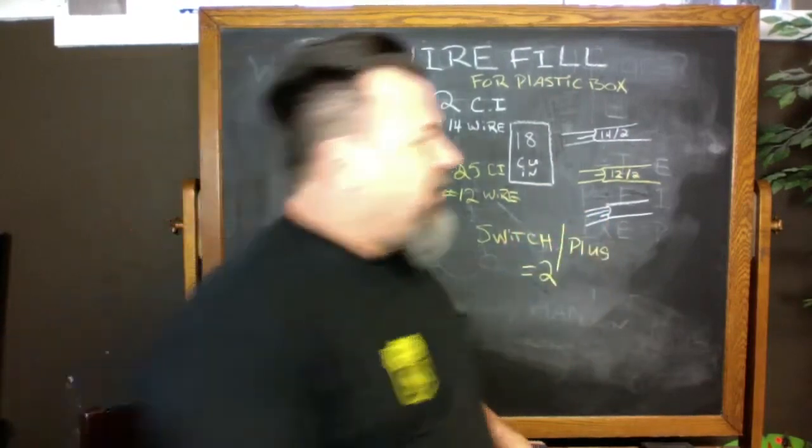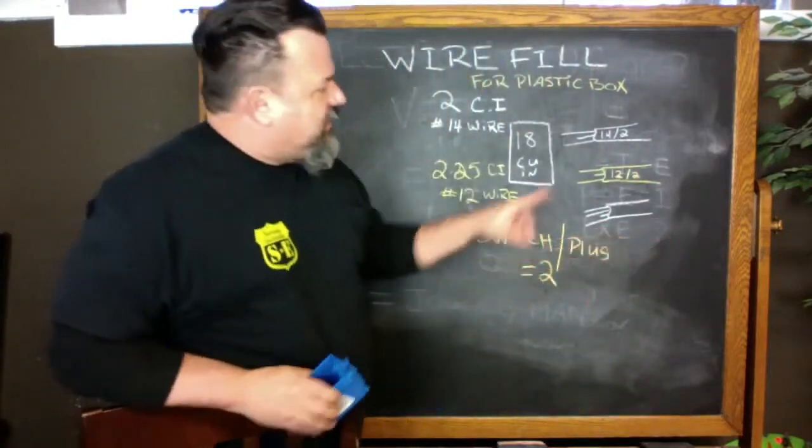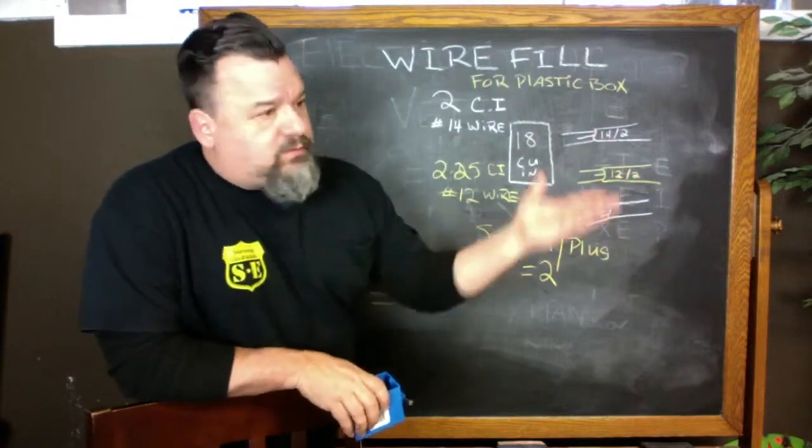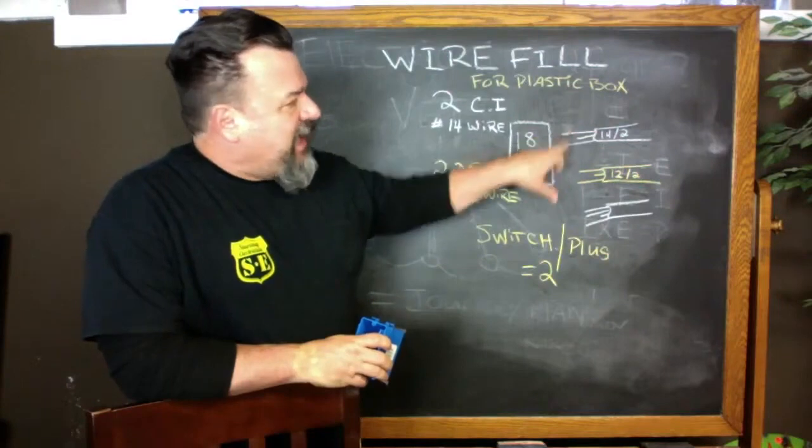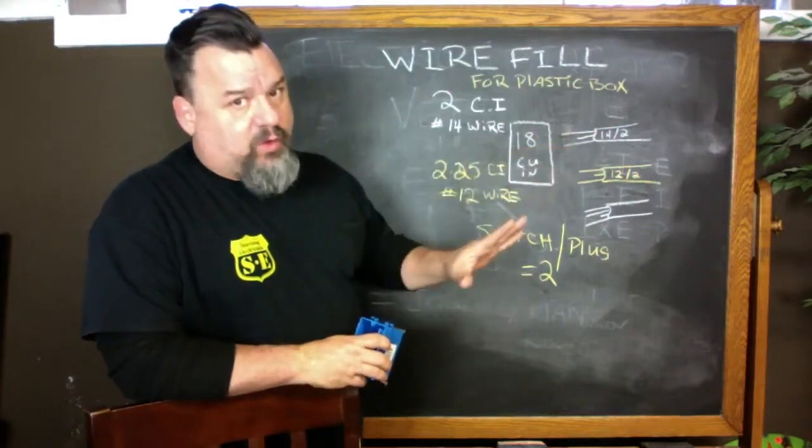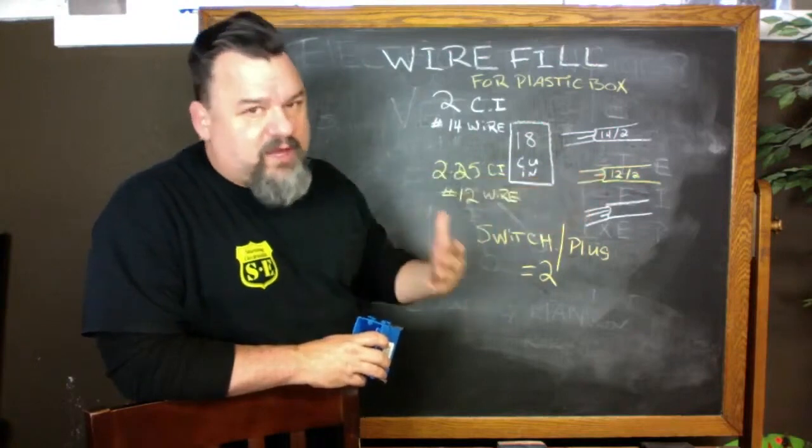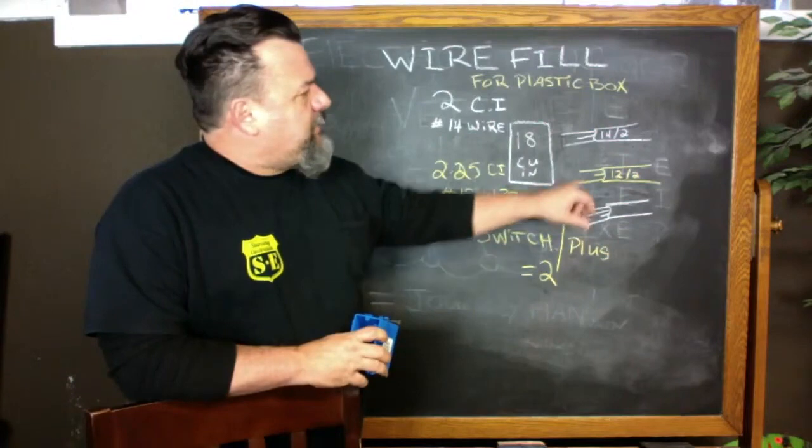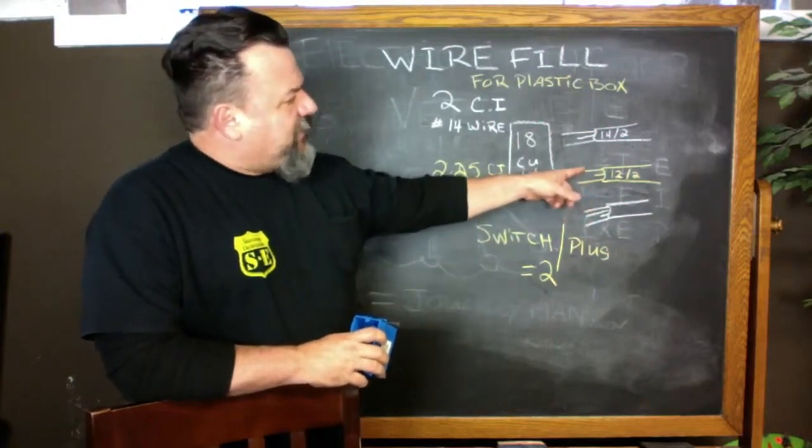Let's say this is a 14-2, that white wire that goes on your 15 amp breaker. Each one has a black, white, and ground. Let's say that's 12-2, that's a little heavier gauge that goes in your kitchen or 20 amp circuit. Each one of these wires has a black, white, and a ground.